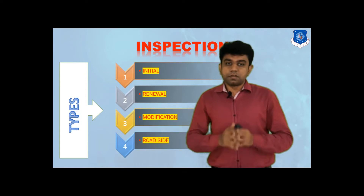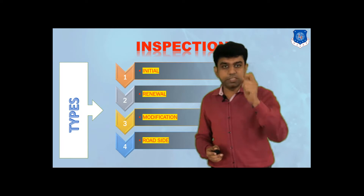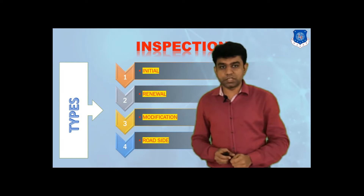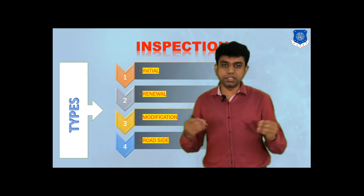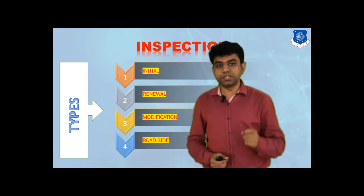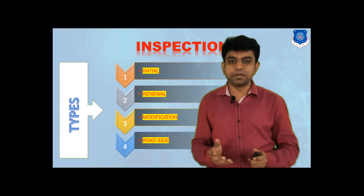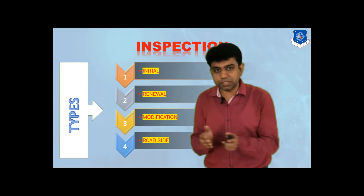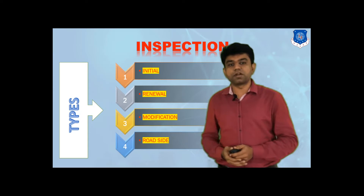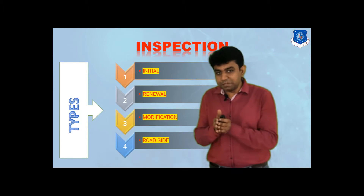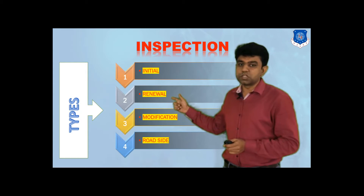Any vehicle which is actually being sold into the market is first inspected. This inspection happens at the RTO side. The RTO initially issues a permission of 15 years — that this vehicle can be driven on the road for a 15-year period. That particular inspection is nothing but the initial inspection, which certifies that the vehicle can be driven for the next 15 years.